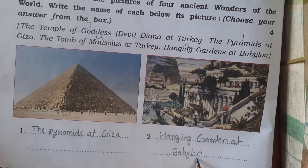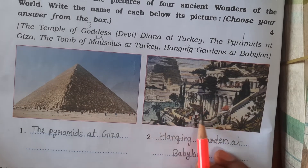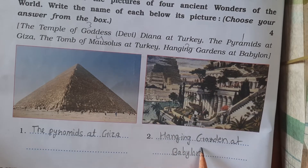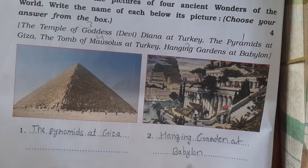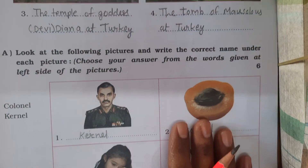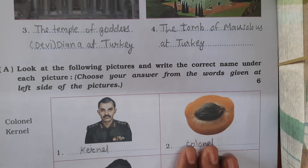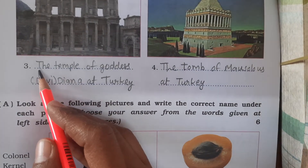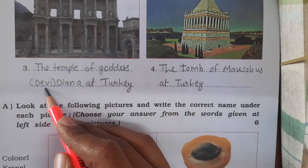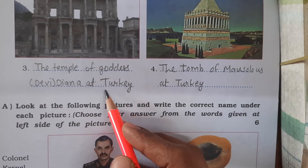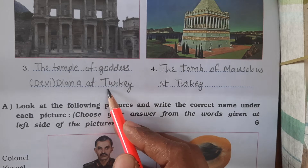The Hanging Gardens of Babylon — now look at the next question on page 49, number 8. On page 49, number 3, we will look at the Temple of Goddess Diana, which is in Turkey.